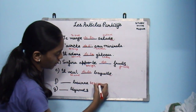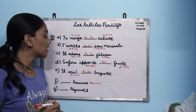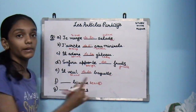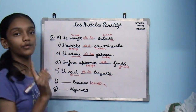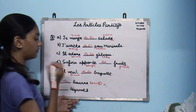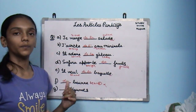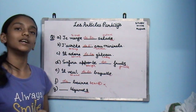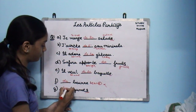Next word: beurre — B-U-R-R-E. Though it has an E at the end, it is an exception — it is not feminine. So it would be du beurre. Then légumes: it has an S at the end, so it is plural, so des légumes.